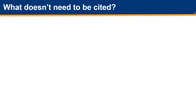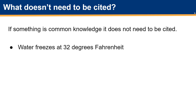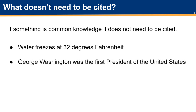Is there anything that doesn't need to be cited? Yes, if something is common knowledge — meaning that it can be found in many different sources and is a well-known fact — then it does not need to be cited. Two good examples of common knowledge are water freezes at 32 degrees Fahrenheit, and George Washington was the first President of the United States.